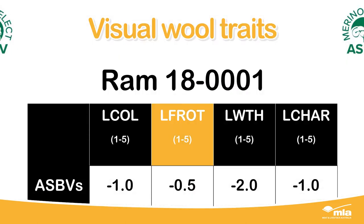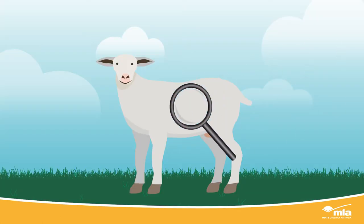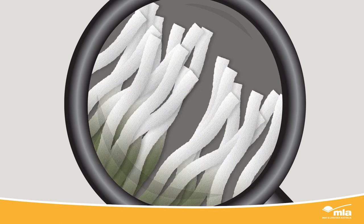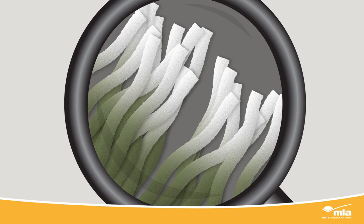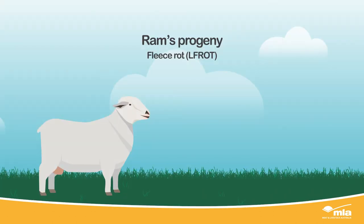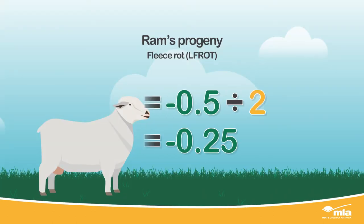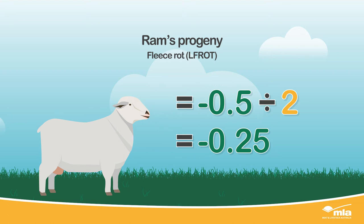LFROT is fleece rot and describes the susceptibility of an animal to fleece rot. A ram with a fleece rot ASBV of negative 0.5 will on average produce progeny that show a negative 0.25 score for less stain or crusting in the staple.